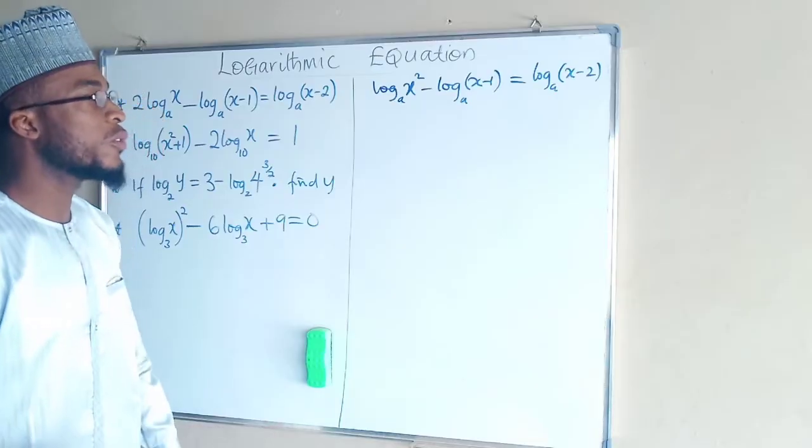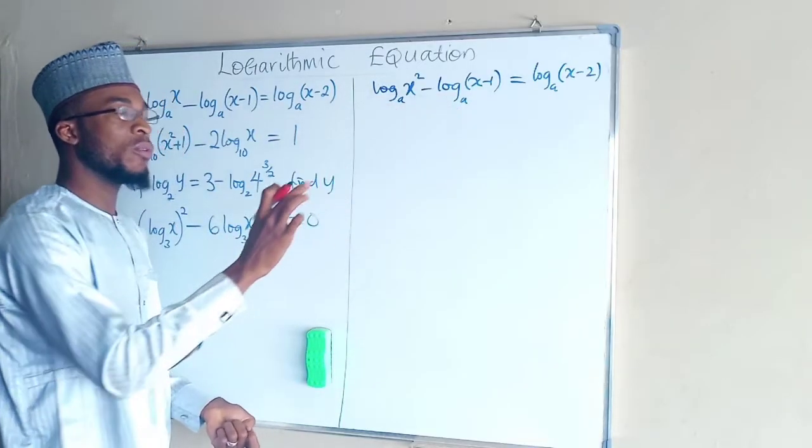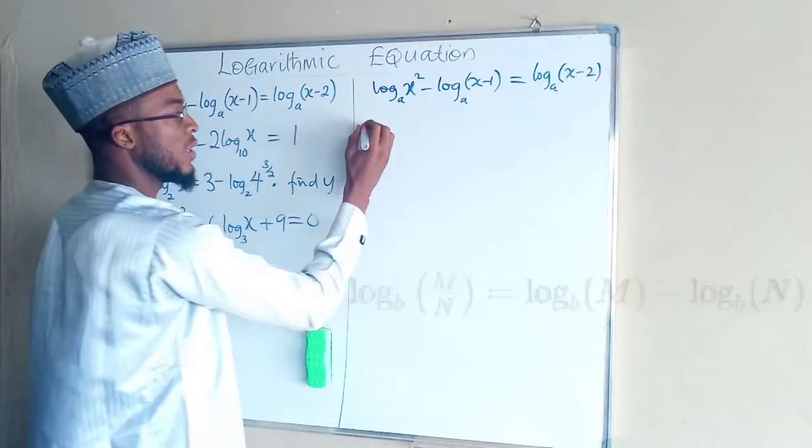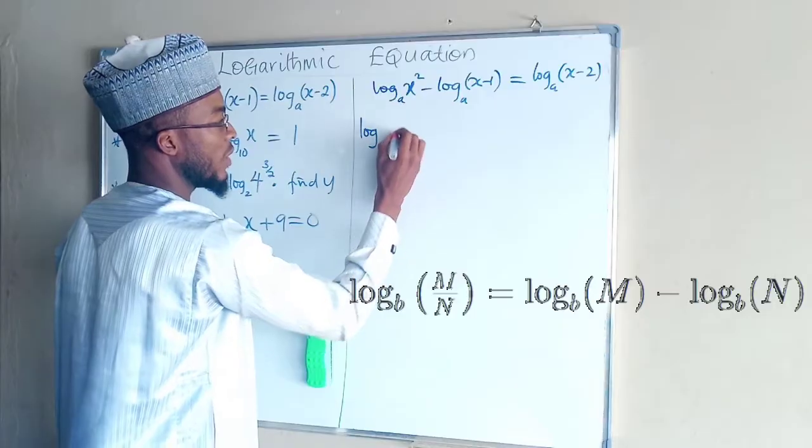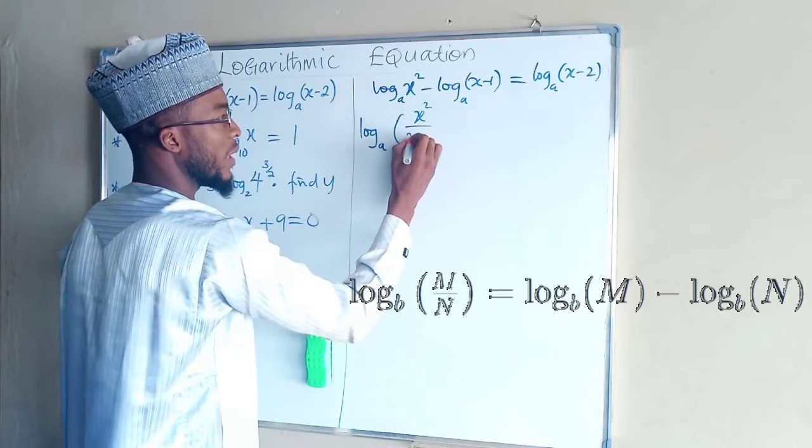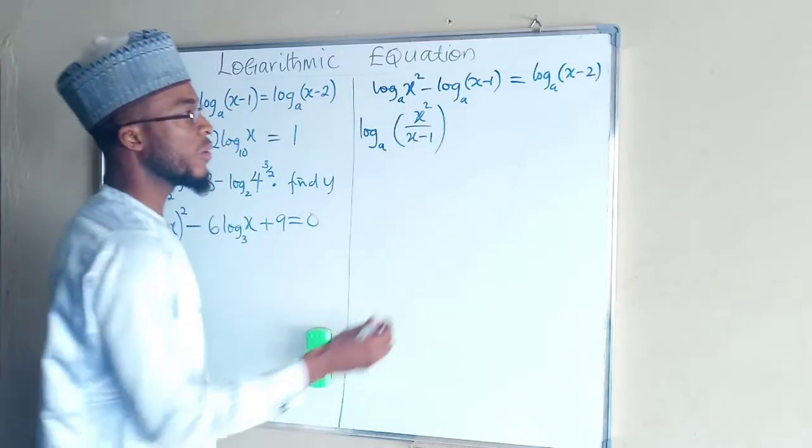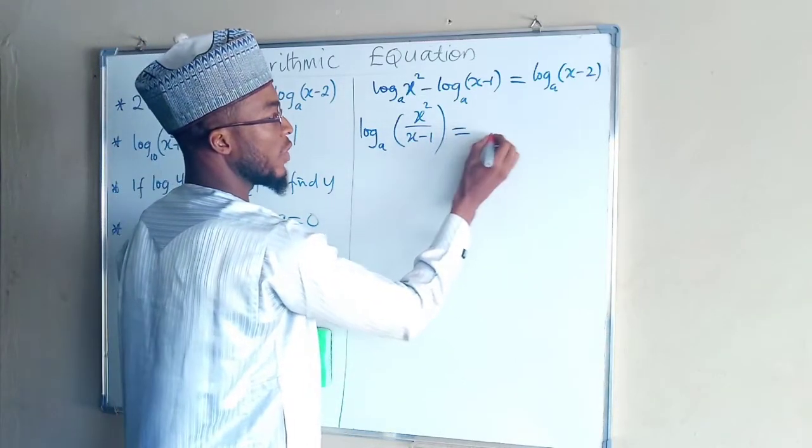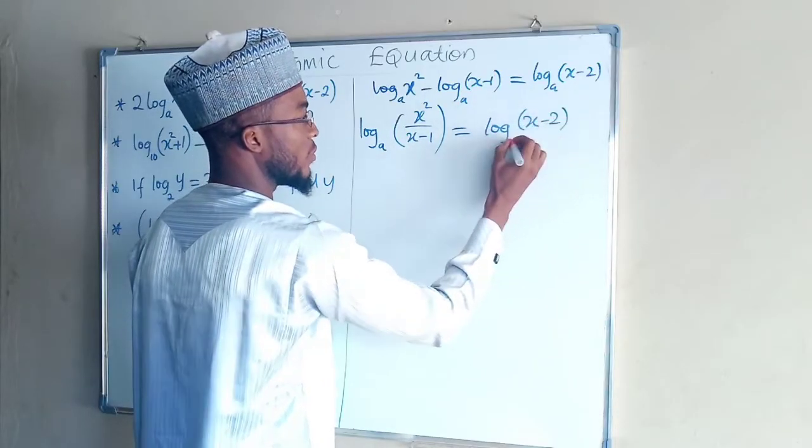From the laws of logarithms again, you can transform these two terms to have a single log. By factorization we have log base a of x squared divided by x minus 1. You have to master your laws of logarithms. And this equals log of x minus 2.